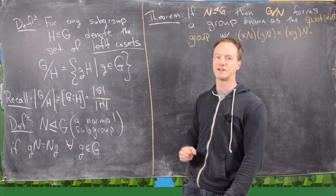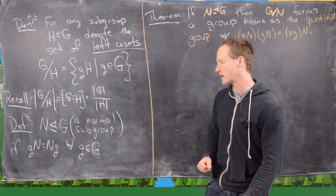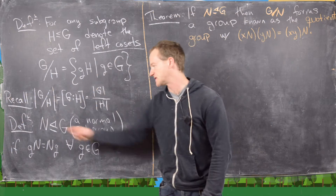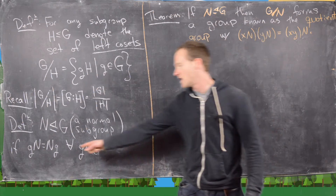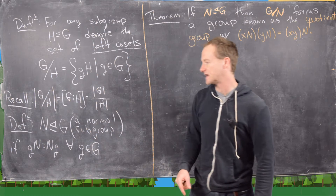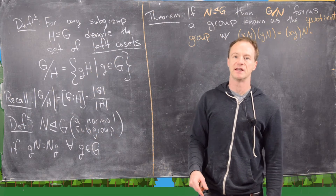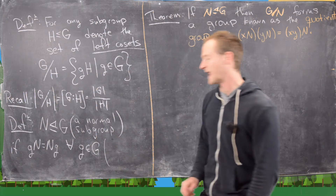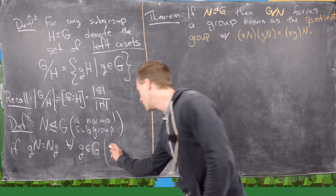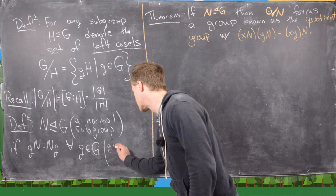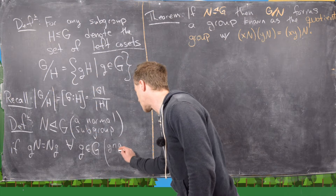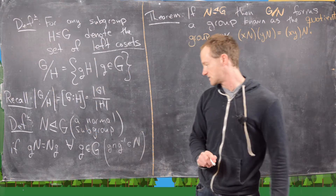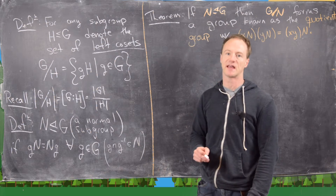Another definition to review is that of a normal subgroup. We say N is a normal subgroup — notation: little triangle — if the left coset gN is the same as the right coset Ng. We often check this with an element-wise calculation: we check that g times n times g-inverse is an element of the subgroup N.